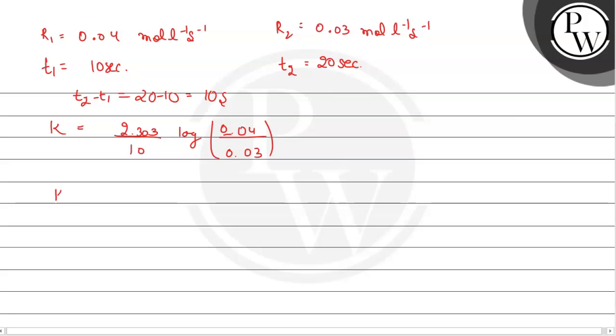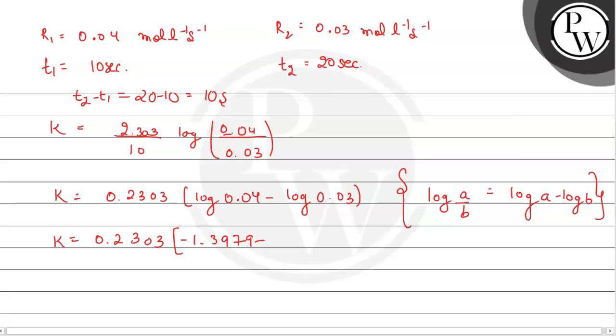This will become, when divided by 10, we'll shift the decimal place to the right, 0.2303, and this term will become log of 0.04 minus log of 0.03. Here I've used the formula log of a upon b equals to log a minus log b. On simplifying, the log values from the log table give us minus 1.3979 minus 1.5228.